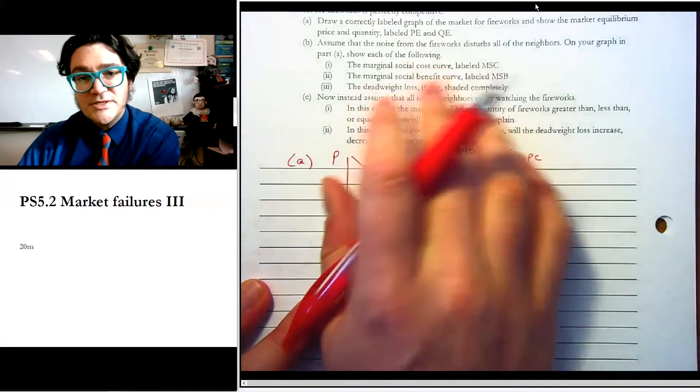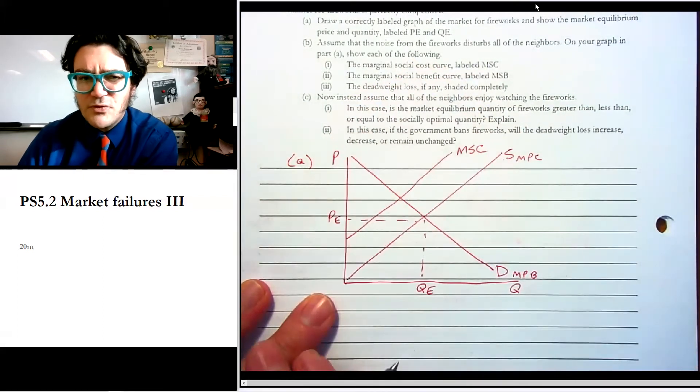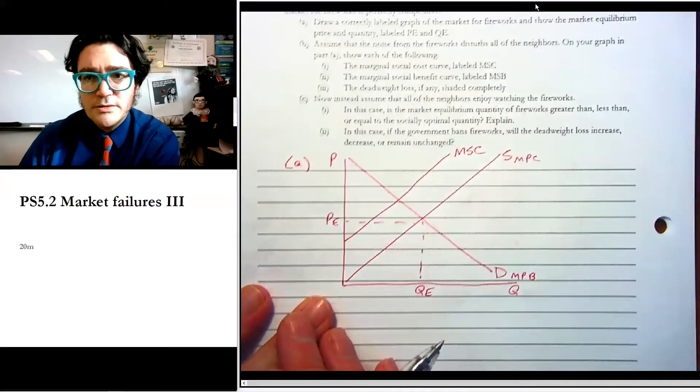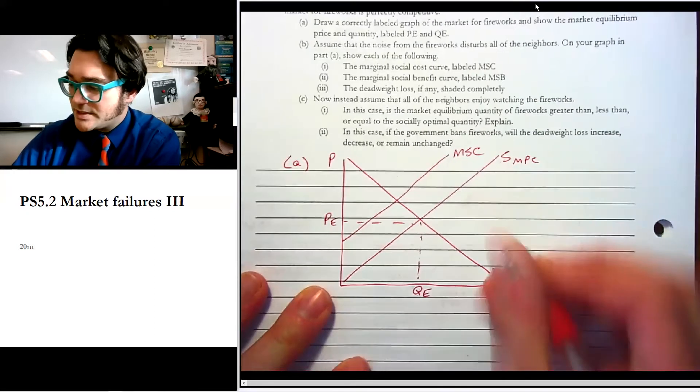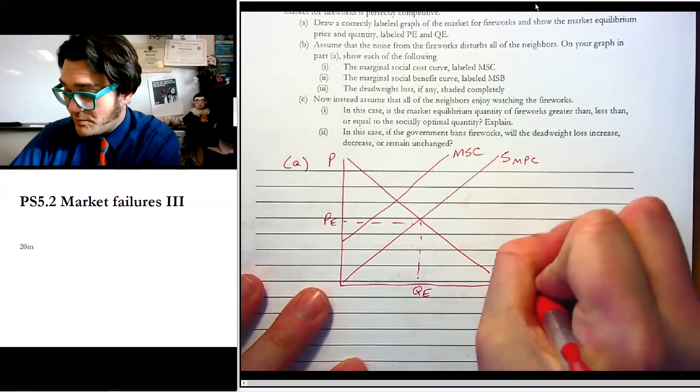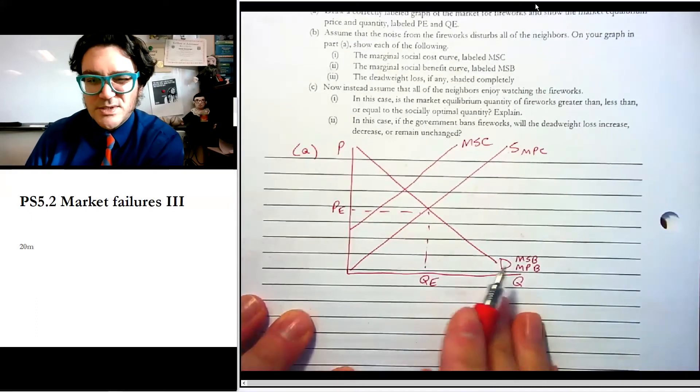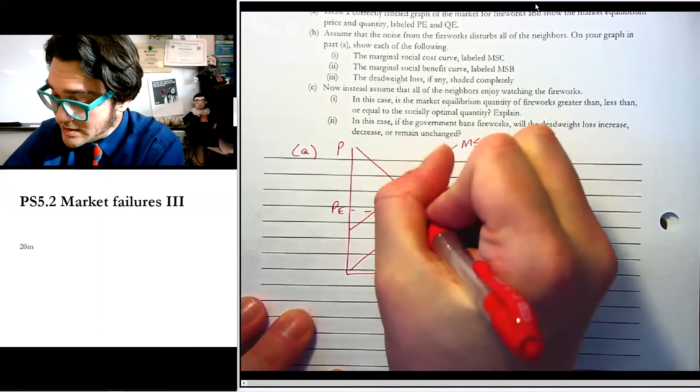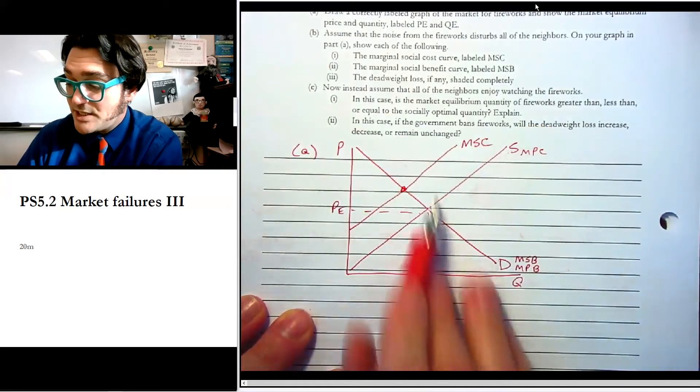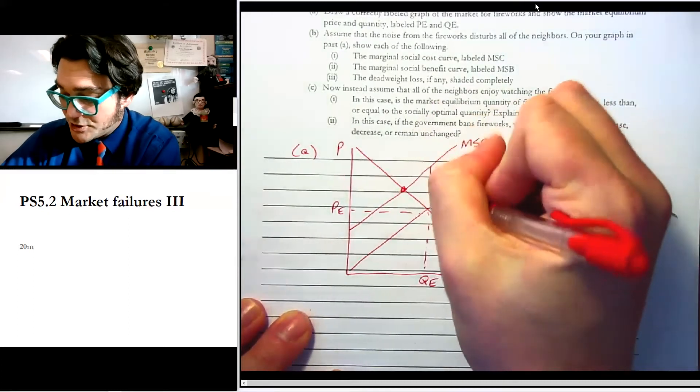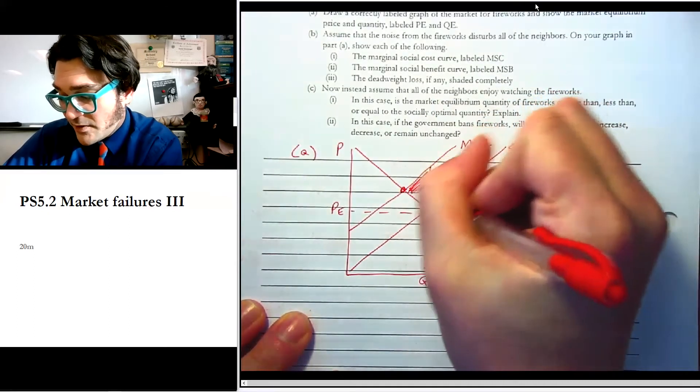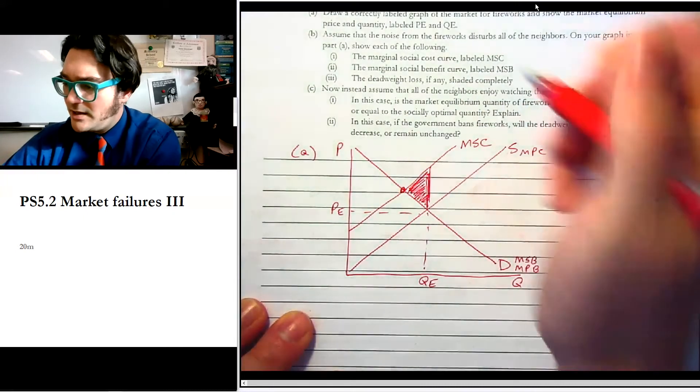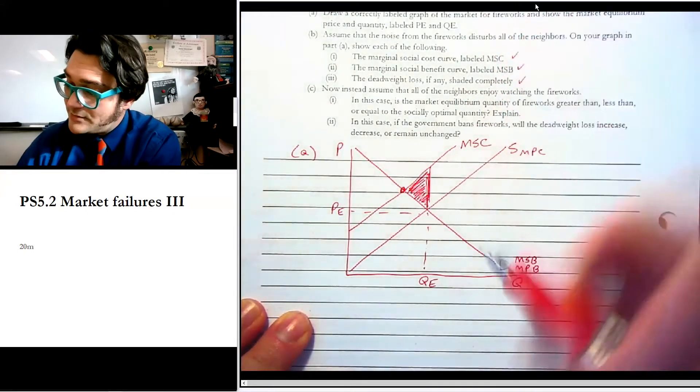Now it also tells us, hey, label that MSB. And that threw some students off this year because they were like, what do I do? It's just the same curve, MSB. Remember what I told you in the lecture, right? If there's no external benefit, MSB and MPB are the same thing. Now, this is our optimal because it's where MSB and MSC are. And so we can just shade right there. Okay. So we've done, we did that one. We did that one. We did that one.